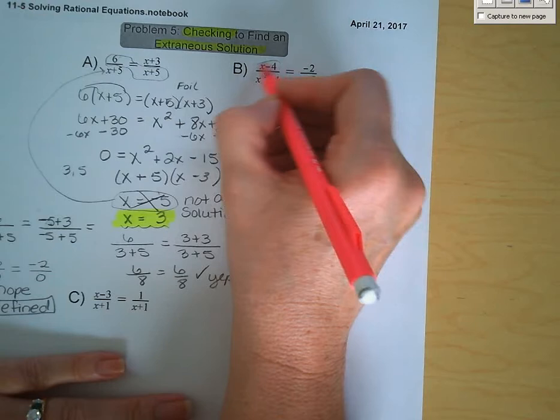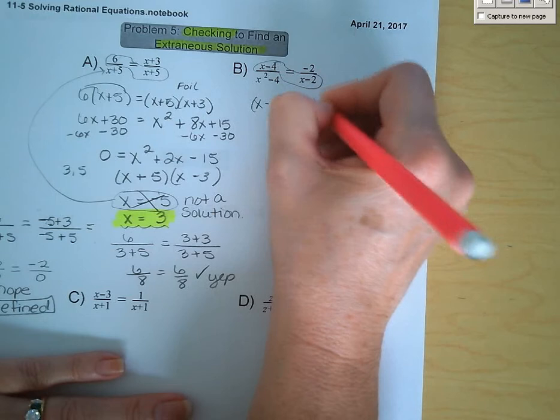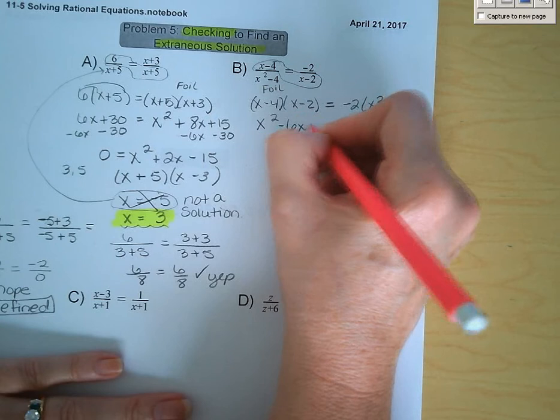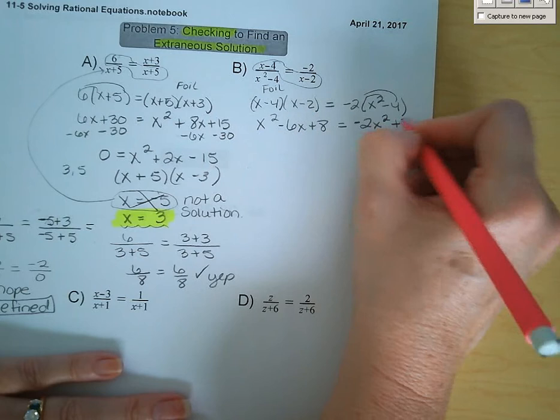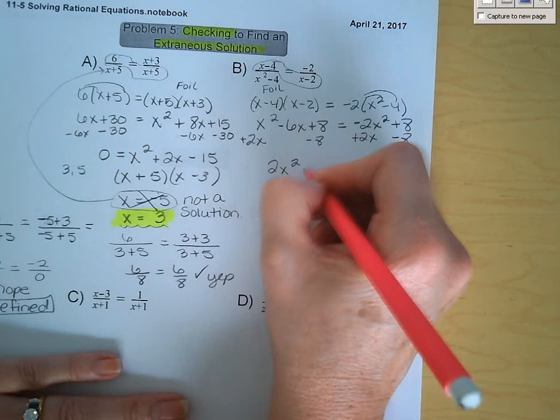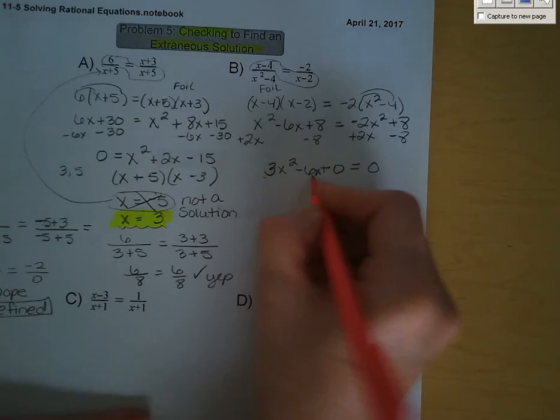Next one — cross multiply: x minus 4 times the quantity x minus 2 is equal to negative 2 times the quantity x squared minus 4. We're going to have to FOIL. We get x squared minus 6x plus 8 is equal to — using the distributive property — negative 2x squared plus 8. We want all terms on the same side, so we're going to add 2x squared and subtract 8.